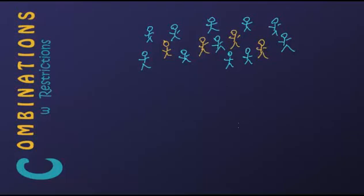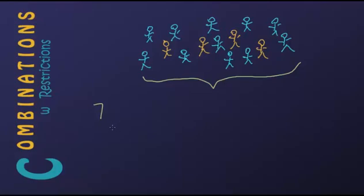Let's try our hand at solving two combinatorial problems that contain restrictions. In a group of fifteen people, there are four brothers. A group of seven is to be chosen from these fifteen people, such that this group of seven contains exactly all four brothers. How many such groups of seven are there?